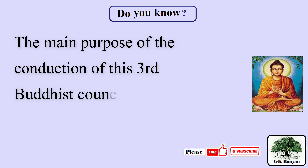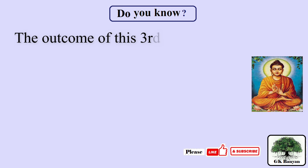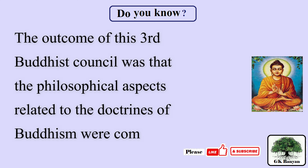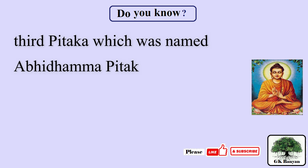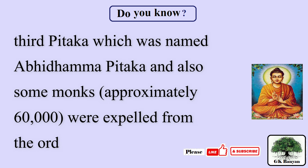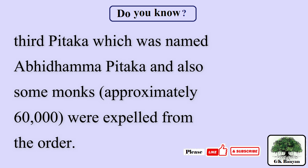The outcome of the third Buddhist council was that the philosophical aspects related to the doctrines of Buddhism were compiled into the third Pitaka, which was named Abhidhamma Pitaka. Also, approximately 60,000 monks were expelled from the order.